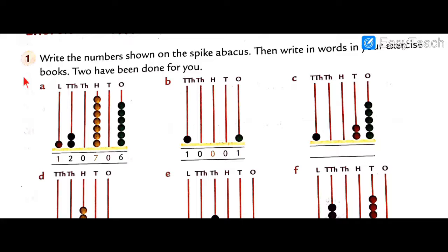Let's look at Question Number 1 and first revise the place value chart. The place values are: lakh, ten thousand, thousand, hundred, tens, and ones. I hope you remember — lakh, ten thousand, thousand, hundred, tens, and ones.